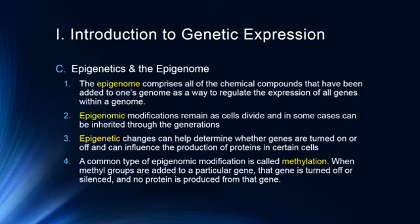A common type of epigenomic modification is called methylation. When methyl groups are added to a particular gene, that gene is turned off or silenced and no protein is produced from it. This is a common way genetic expression is changed. For example, epigenetics could explain why some people suddenly become lactose intolerant — they're no longer producing an enzyme because a methyl group was added to a particular gene. These genetic modifications can influence how we process foods, drugs, how our brain handles drugs, and anything involving protein production, including neurotransmitters.